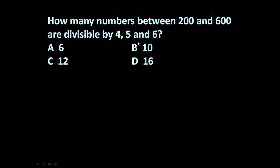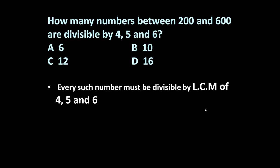We have to find out the numbers between 200 and 600 which are divisible by 4, 5, and 6 completely. To solve such type of problem, first let us determine the LCM of 4, 5, and 6. It has to be divisible by 4, 5, and 6, so let us determine LCM of 4, 5, 6, which is equal to 60.